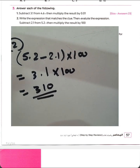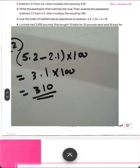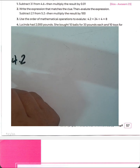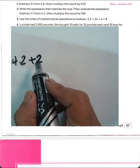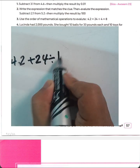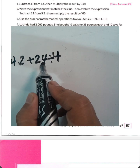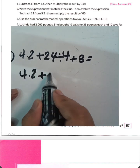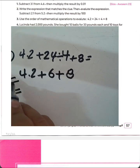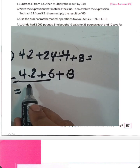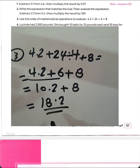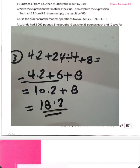Question number 3. Use the order of operations to evaluate: 4.2 plus 24 divided by 4 plus 8. First, division: 24 divided by 4 equals 6. Then: 4.2 plus 6 plus 8. Addition: 4.2 plus 6 equals 10.2, plus 8 equals 18.2. The result is 18.2.